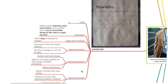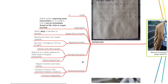The third category is Expedited, Code 3. Description: stable patient requiring early intervention for a condition that is not an immediate threat to life, limb or organ survival. Target time to theatre: within days of decision to operate. Expected location: elective list with spare capacity or daytime emergency list; not at night. Example scenarios include tendon and nerve injuries, stable non-septic patients for a wide range of surgical procedures, and retinal detachment. Typical procedures include repair of tendon and nerve injuries, excision of tumour with potential to bleed or obstruct, and coronary angioplasty.